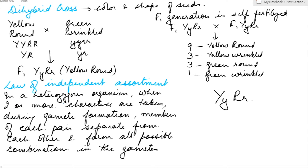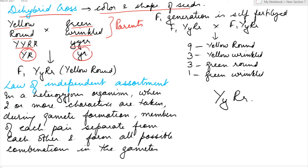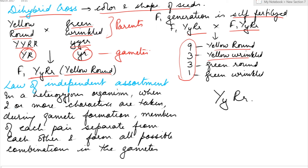The dihybrid cross done by Mendel was by taking the color and the shape of seeds. He crossed yellow round seeds with green and wrinkled seeds. Yellow round is dominant over green and wrinkled. The parental generations are always taken as pure, and these are the gametes. When yellow round is crossed with green and wrinkled, in the F1 generation all offspring produced were yellow round. When the F1 generation is self-fertilized, he got the ratio 9:3:3:1 — 9 were yellow round, 3 were yellow wrinkled, 3 were green round, and 1 was green and wrinkled.